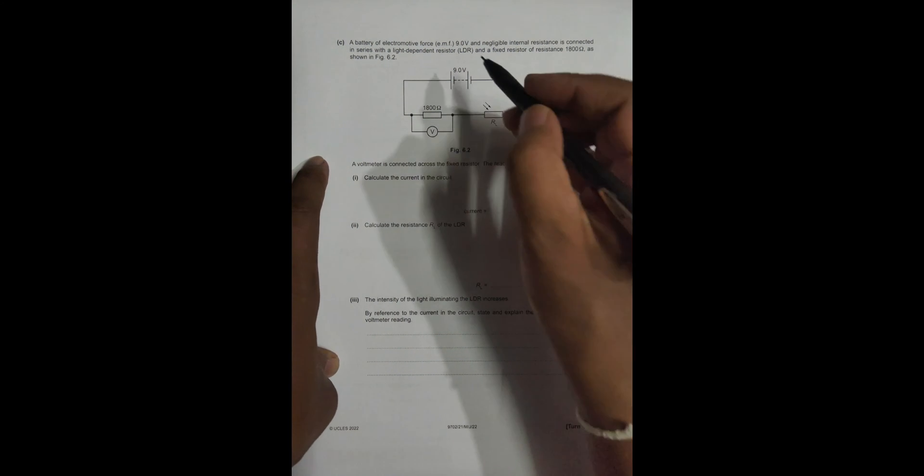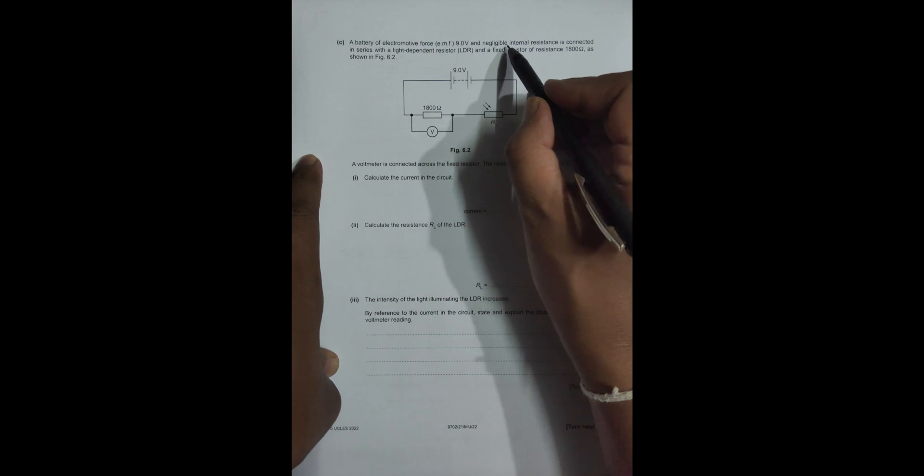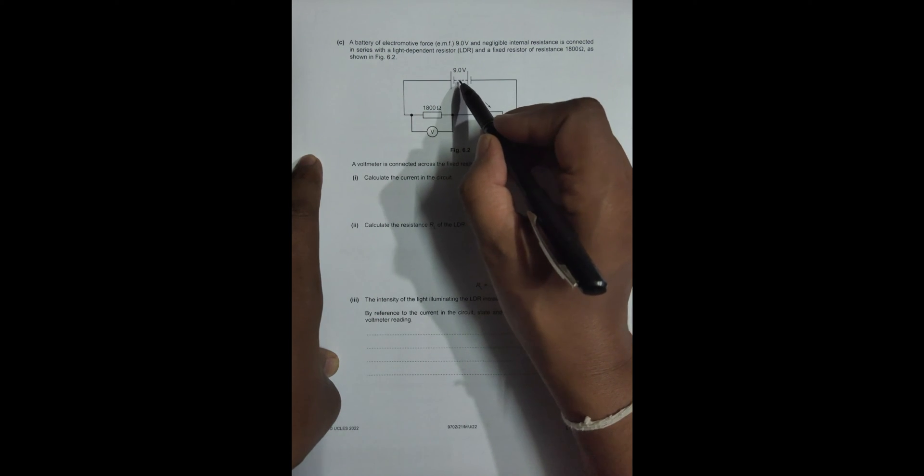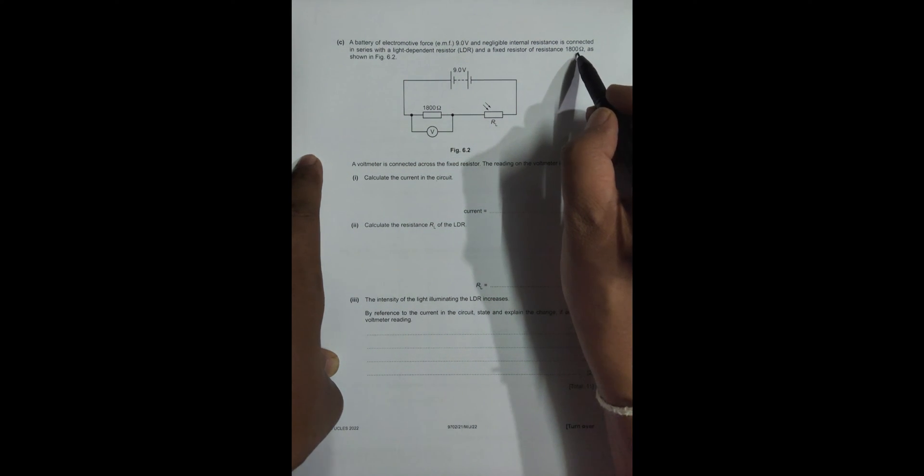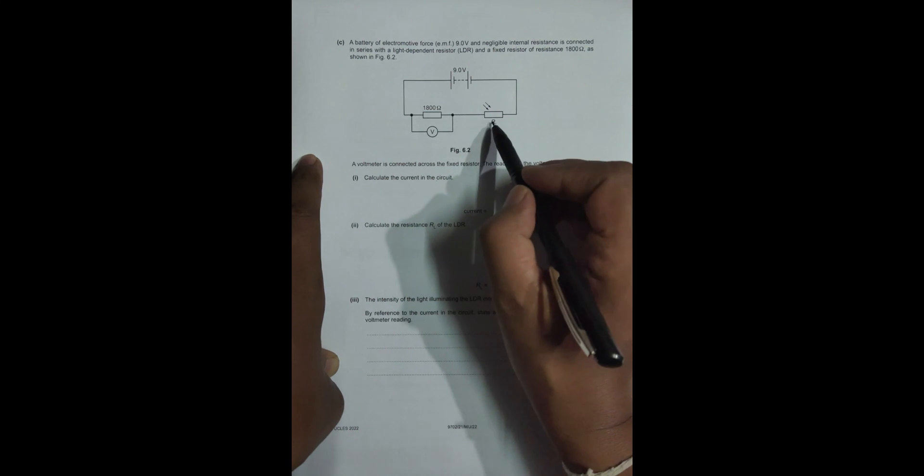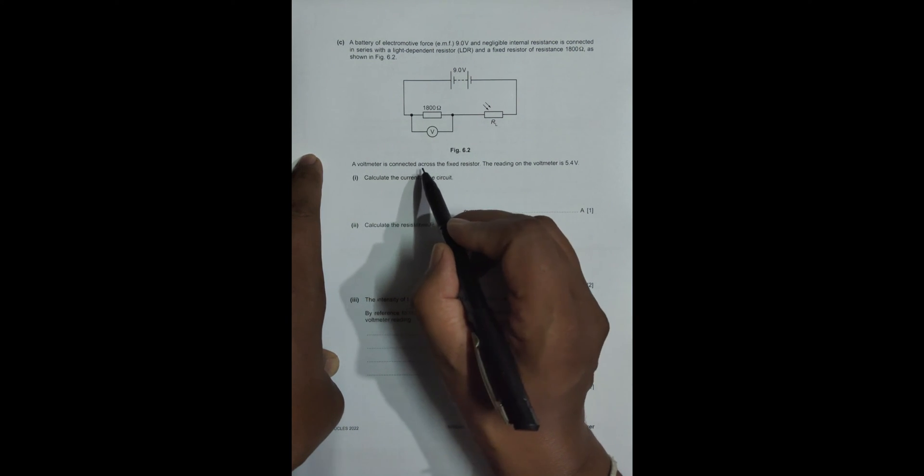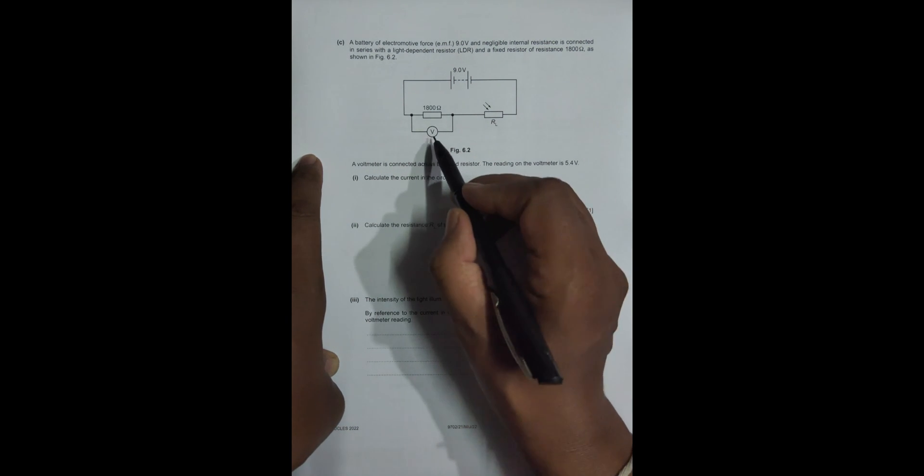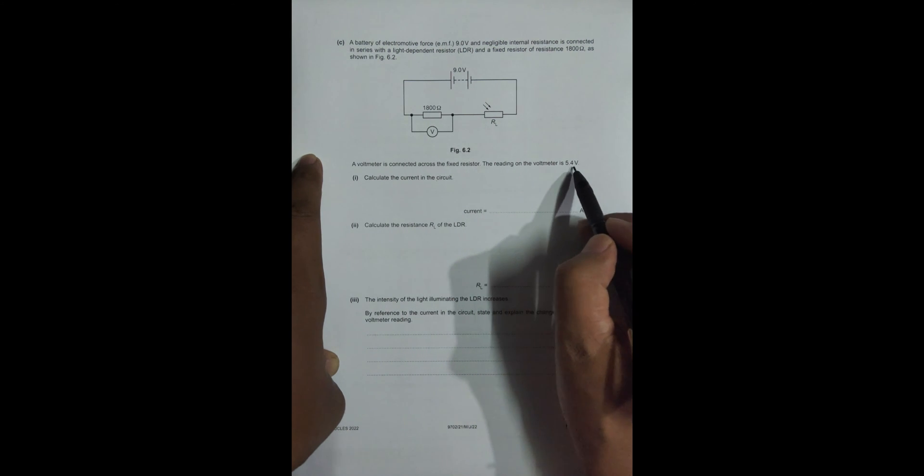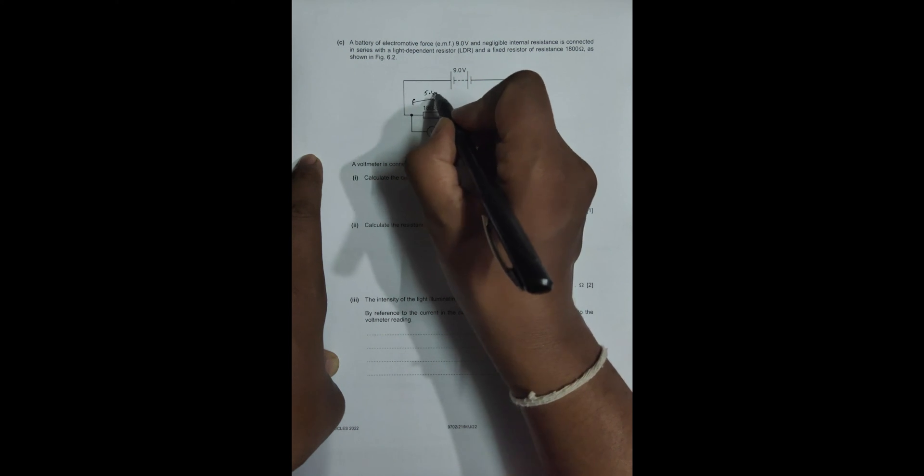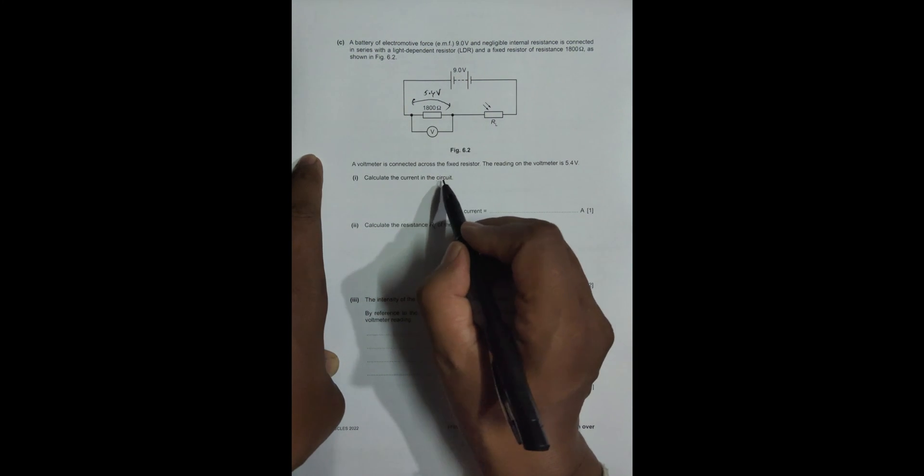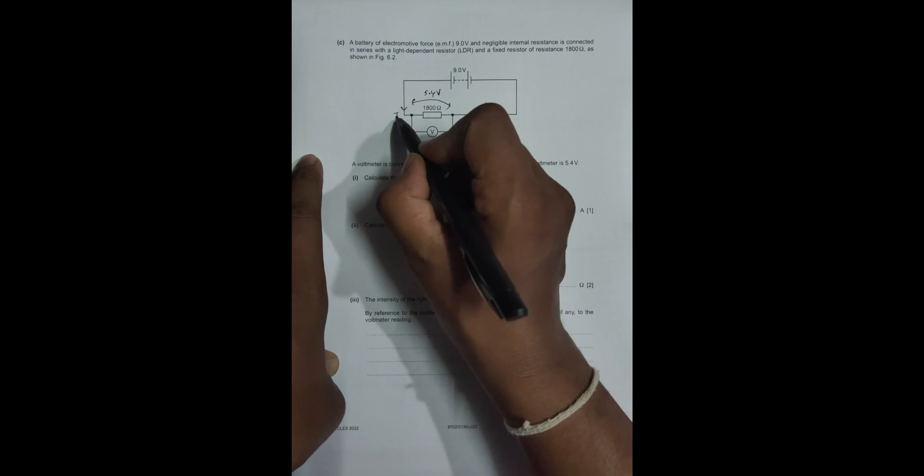The question says a battery of EMF 9 volt and negligible internal resistance is connected in series with an LDR and a fixed resistor of resistance 1800 ohm, as shown in figure 6.2. A voltmeter is connected across the fixed resistor. The reading on the voltmeter is 5.4 volt. Calculate the current in the circuit. So I have to find this current I.